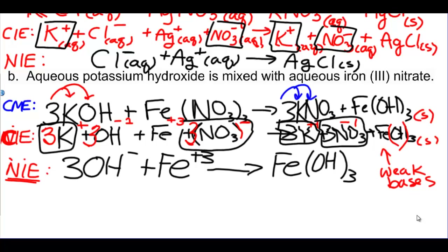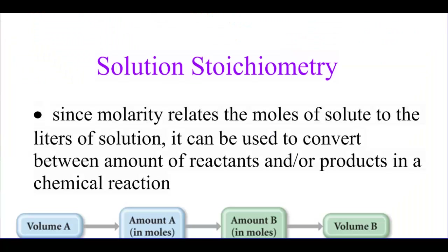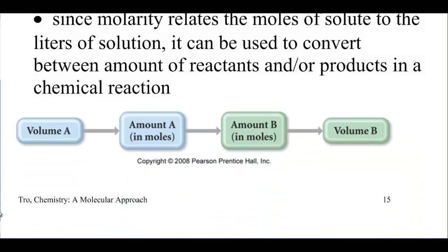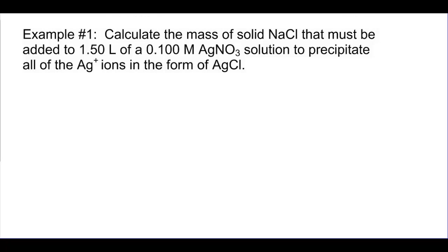We can also do calculations with these equations — and they're no different from any other stoichiometry calculation. The process is: write and balance the equation, plug in what you know, get moles of the known, convert to moles of the unknown, and solve for what they ask. The same process from Chapter 3 — the difference is now we use molarity as a way to find moles.